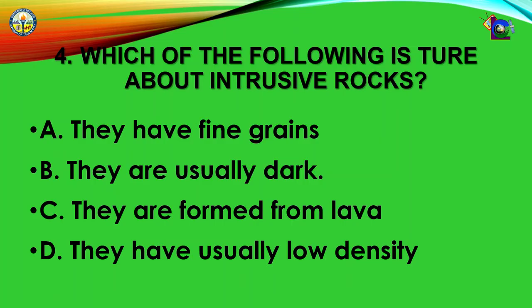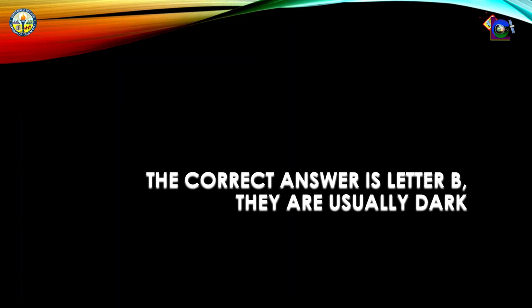Question number 4: Which of the following is true about intrusive rocks? A. They have fine grains, B. They are usually dark, C. They are formed from lava, D. They have usually low density. The correct answer is letter B — they are usually dark.